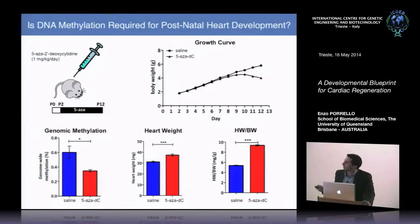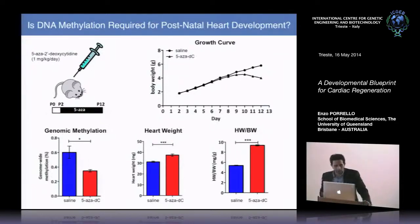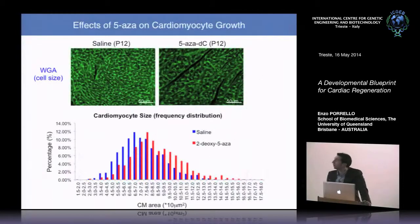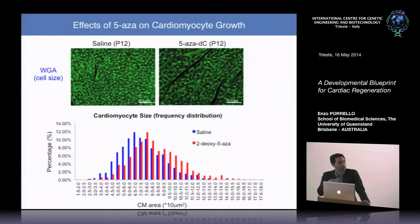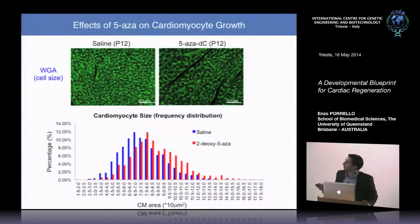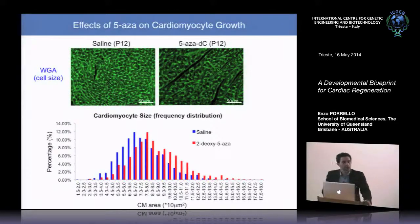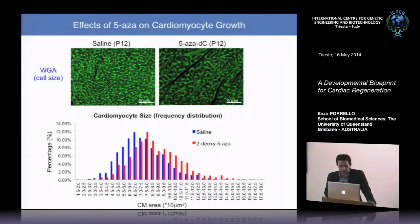5-AZA treatment was associated with a significant increase in heart weight, and when normalized to the reduced body weight at postnatal day 12, there was a large increase in heart-to-body weight ratio. Measuring cardiomyocyte cross-sectional area using wheat germ agglutinin staining showed a rightward shift in cardiomyocyte size distribution in the 5-AZA group, suggesting 5-AZA induced cardiomyocyte hypertrophy — larger myocytes that could account for the increased heart weight.